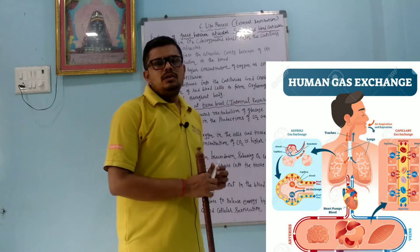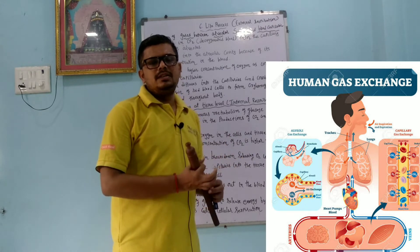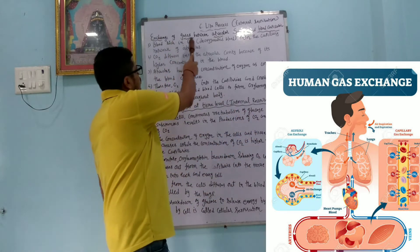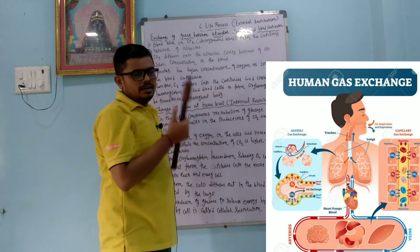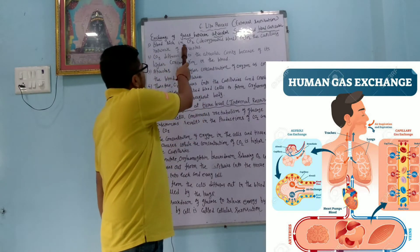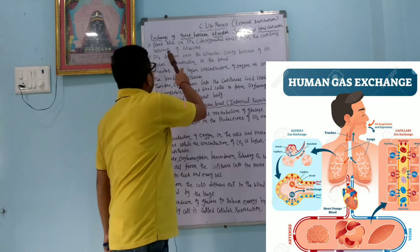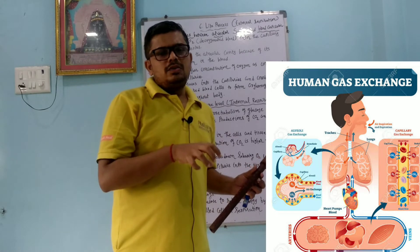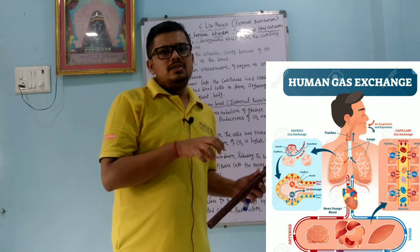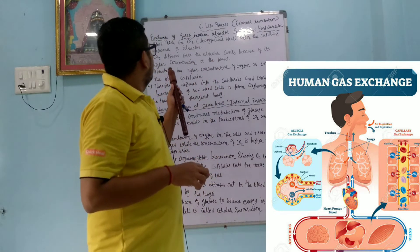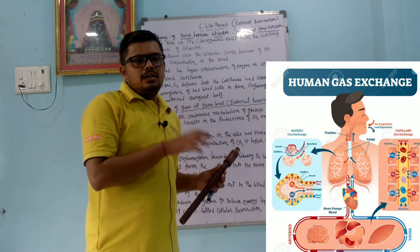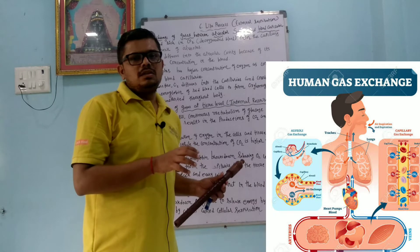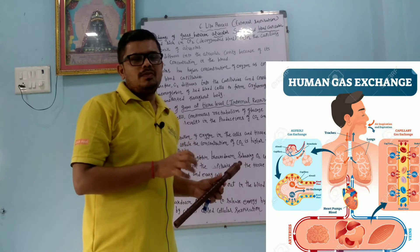Now we will learn about the exchange of oxygen and carbon dioxide in the lungs — how it takes place. In the exchange of gases between the alveolar sacs and blood capillaries, blood rich in carbon dioxide, that is deoxygenated blood, enters the capillary network of alveoli. That blood does not contain oxygen because carbon dioxide is produced during the respiration process.